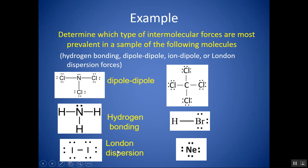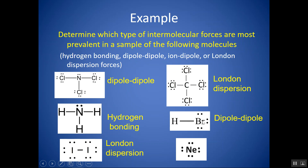To summarize: if it's nonpolar, London dispersion; if it's polar without H bonded to N/O/F, dipole-dipole; if it's polar with H bonded to N/O/F, hydrogen bonding. A symmetrical structure is nonpolar — London dispersion forces. An asymmetrical structure with H but no N, O, or F is polar — that's dipole-dipole. And if you see a single atom, like noble gases, you can assume it's symmetrical and nonpolar — London dispersion only.